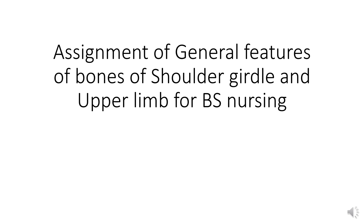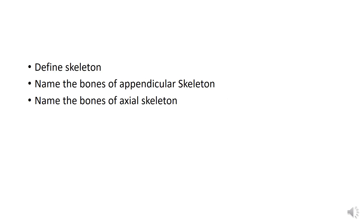Assalamu Alaikum students. This video is about the assignment of the general features of bones of the shoulder girdle and the upper limb for BS Nursing. This is a CQ question and you have to write down with your own writing. You have to define the skeleton — what is the skeleton?